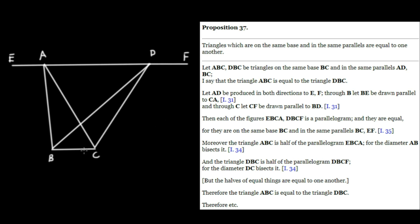And through B, let BE be drawn parallel to CA. So we're going to draw BE so that it's parallel to CA, which we can do by Proposition 31. We simply join these two, so BE is going to be parallel to CA.